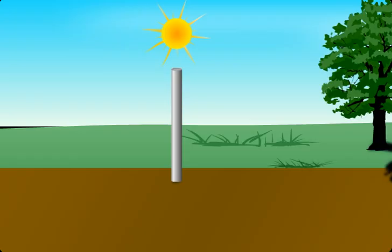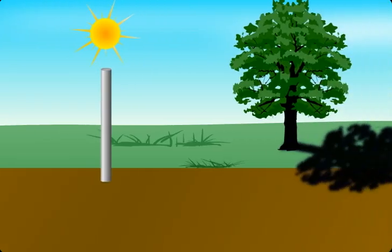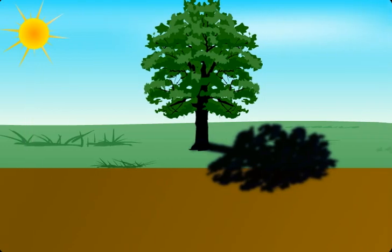So let's talk about shadows in some more detail. Look at this tree. You know this tree does not allow light rays to pass through it. So it's an opaque object. And this region that you see which is completely cut off from light is called the shadow.